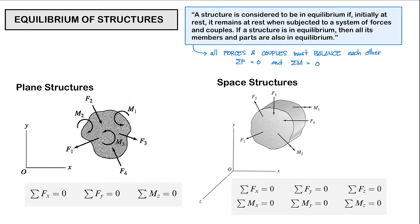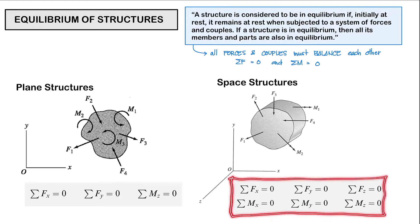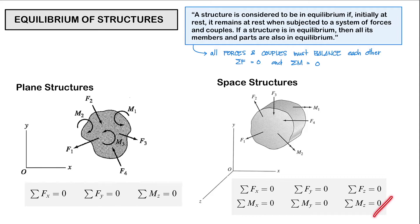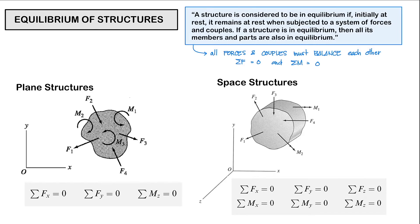A distinction you must remember is that when dealing with plane structures, you will only use three equations of equilibrium. But when dealing with space structures, you will be using six equations of equilibrium. We will typically use the six equations when dealing with space trusses, while the three equations will be applied for most of the structures we study in this subject — your beams, your trusses, your frames.